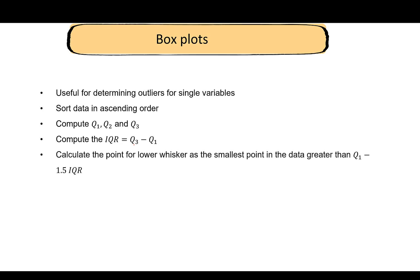How do we detect outliers? A very commonly used method is box plots. Box plots are useful for determining outliers for single variables. We're only looking at one variable at a time. How do we plot box plots? We first sort the data in ascending order, calculate Q1, Q2, Q3, which is the first, second, and third quartiles respectively, then we compute the interquartile range which is Q3 minus Q1, then we calculate the point for lower whisker and upper whiskers, then we build the box plot. Any points that are outside the box plots are considered as outliers.